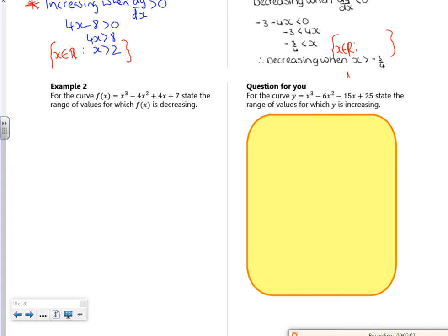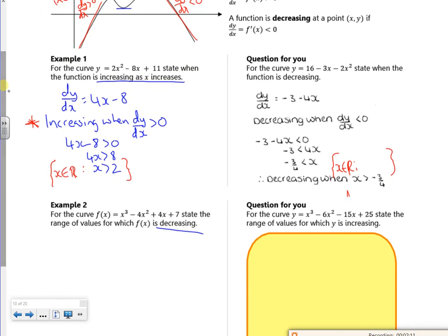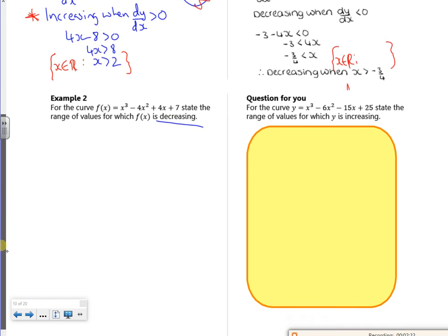Example 2 says, state the range of values when it's decreasing. Now, before it was a quadratic. So we knew it was just kind of increasing from there onwards. And that's fine.